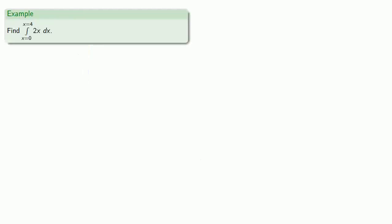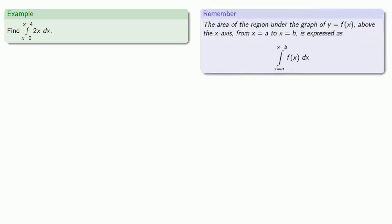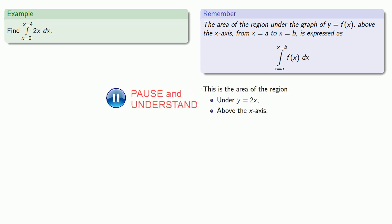So let's see if we can evaluate some definite integrals. How about this one? So we know the definite integral represents the area of some region, so let's figure out what that region is. So we need to know the under, above, from, and to. So to begin with, we're under y equals 2x and above the x-axis. And we're going to consider the region from x equals 0 to x equals 4.